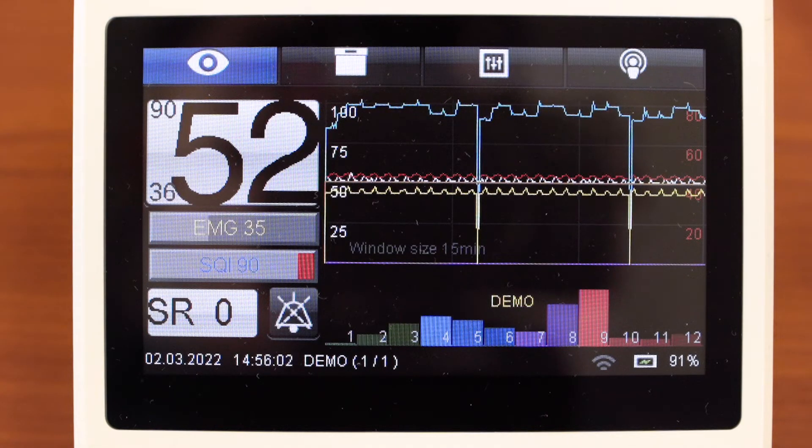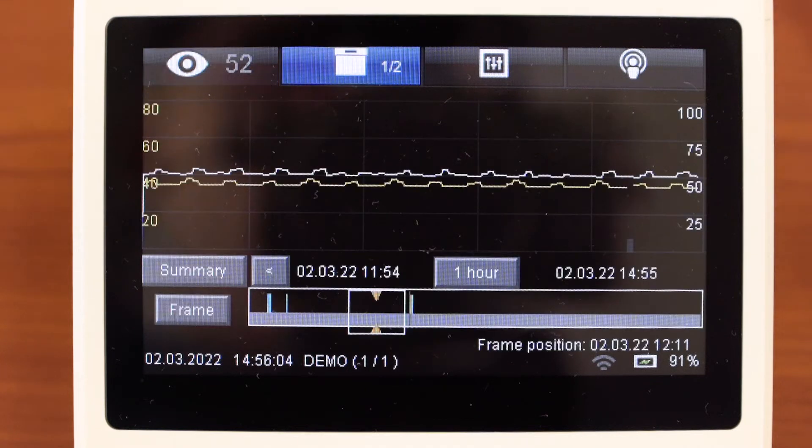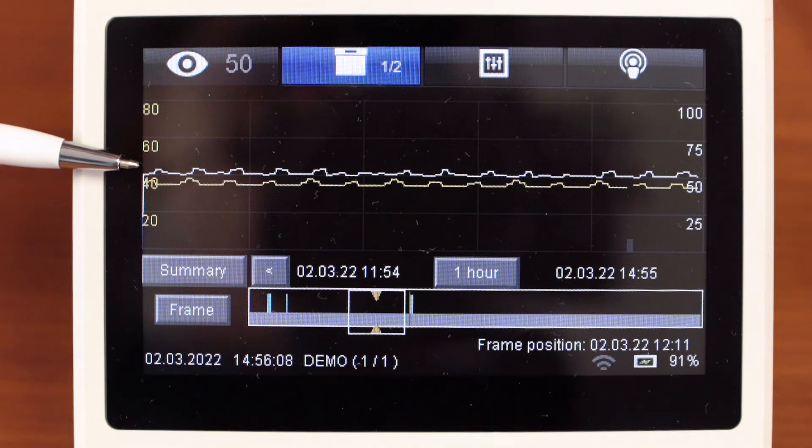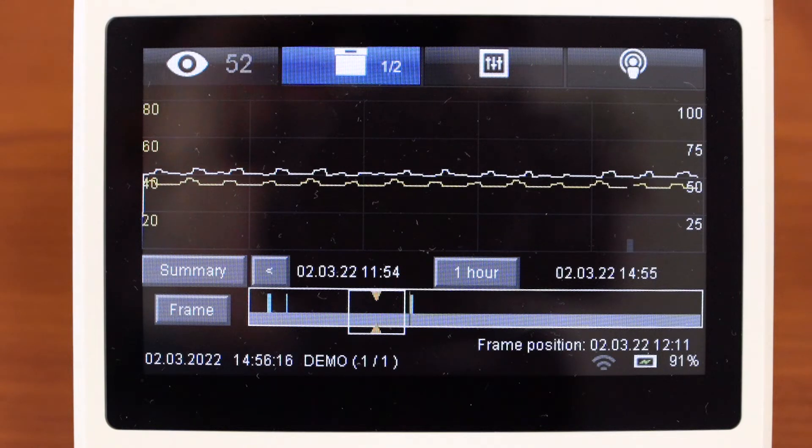The next window is trends. There are two trends: brain activity index white and electromyography component yellow. The device can record trends within 72 hours.